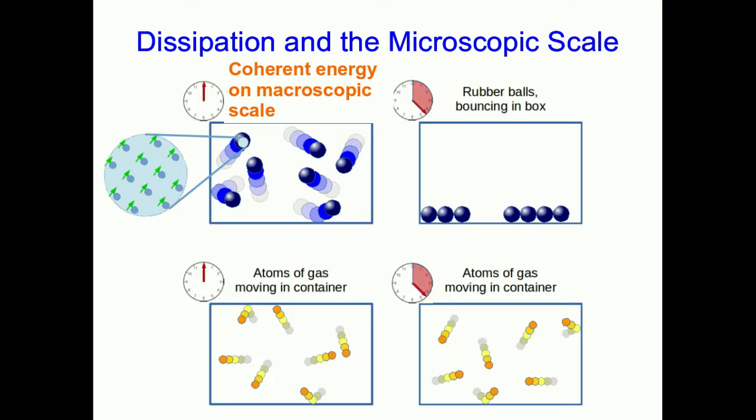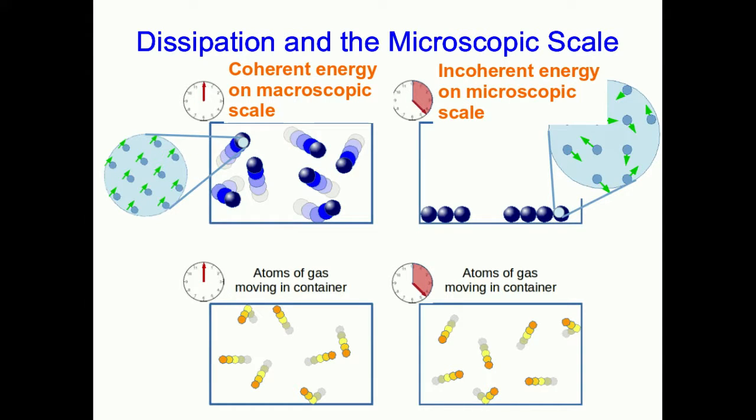But later on, that coherent energy on the macroscopic scale gets turned into incoherent energy on the microscopic scale in the form of all the atoms jiggling around randomly inside the balls. This is thermal energy. And so it's this transformation of coherent macroscopic scale motion into incoherent microscopic scale motion, which is really what we mean by dissipation.